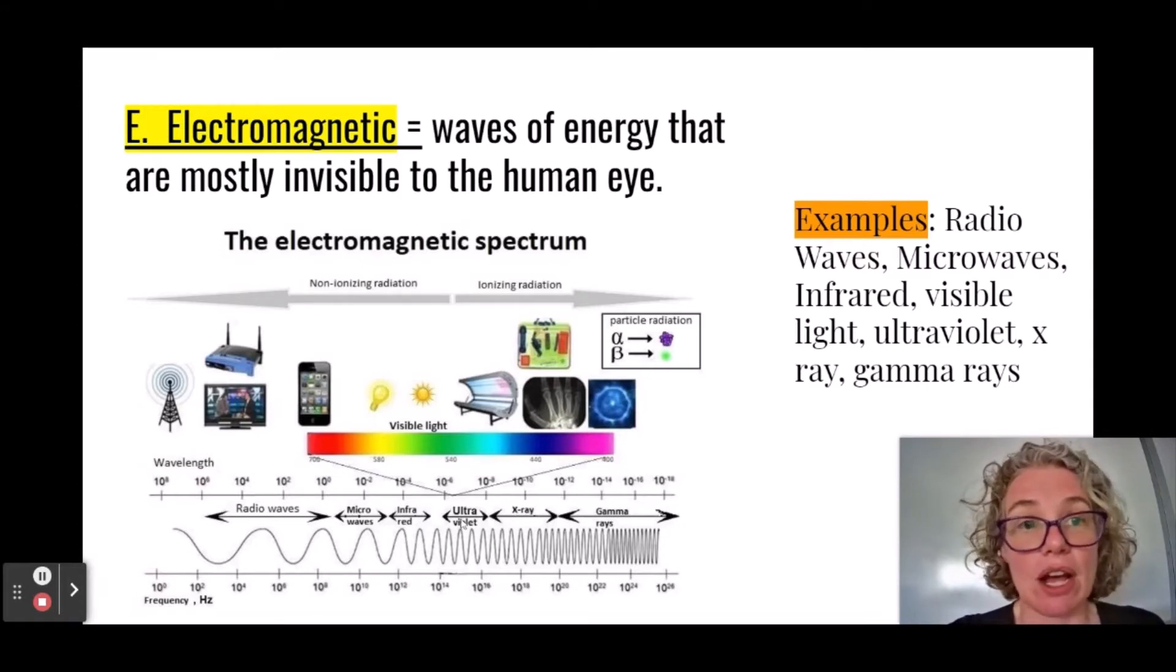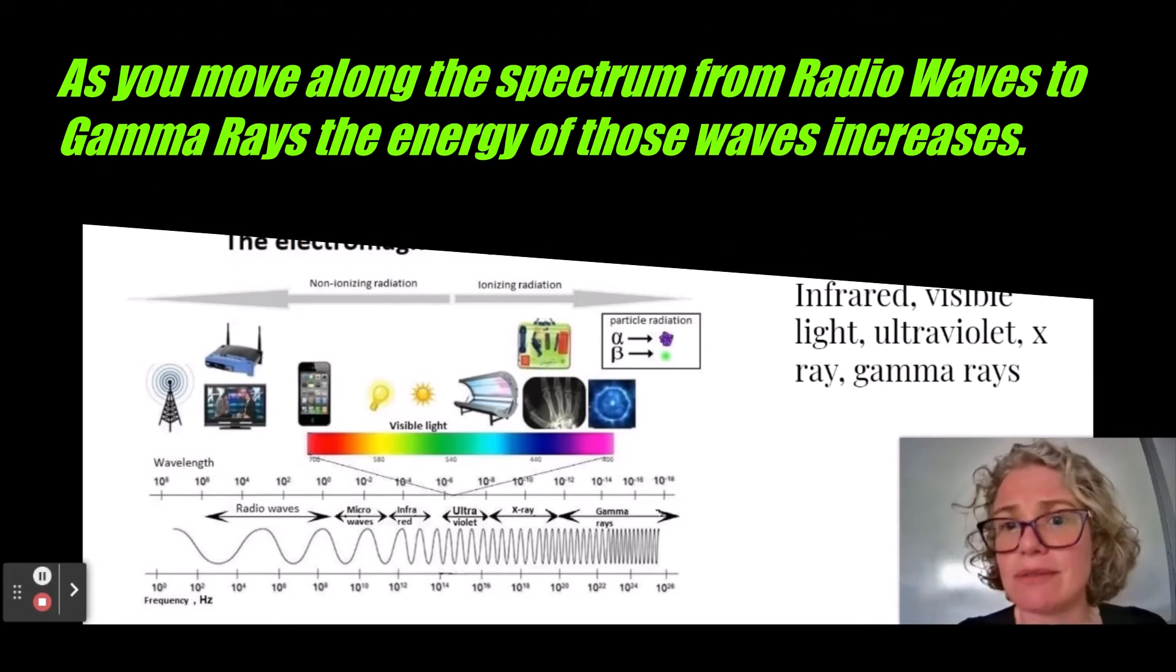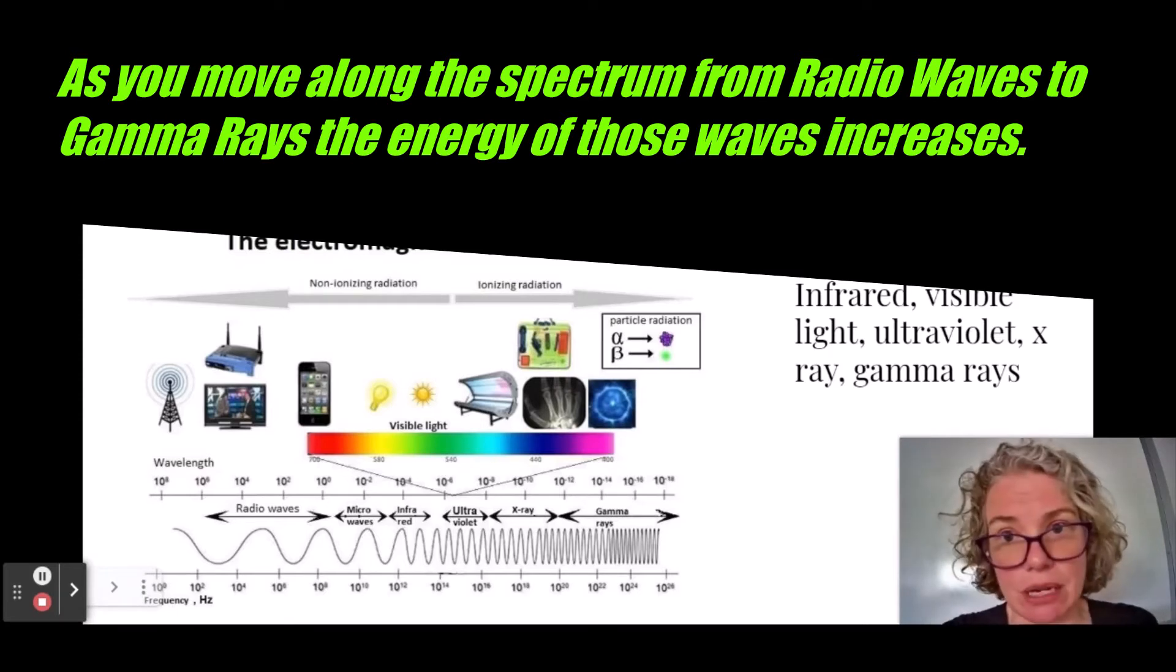And then we've got ultraviolet, and that's the dangerous rays from the sun that we put sunscreen on to block. X-rays, you guys know what those are. And gamma rays, that's what comes off of nuclear particles. Nuclear radiation would be in the form of gamma rays. And you need a three-foot concrete wall to stop these, where radio waves can clearly pass through. Obviously, you can get a cell phone signal within a building, so they can transfer through a building, no problem.